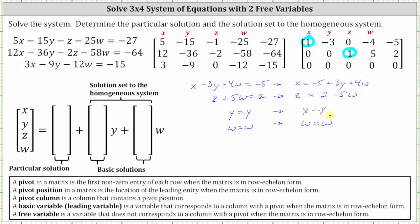Now we use these four equations to write the solution in vector form. Because x equals negative 5 plus 3y plus 4w, the constant term is negative 5, the coefficient of y is 3, and the coefficient of w is 4. So the first entry of the constants column matrix is negative 5, the first entry of the y-coefficient column matrix is 3, and the first entry of the w-coefficient column matrix is 4. Since y equals y, the constant term is 0, coefficient of y is 1, and coefficient of w is 0. Since z equals 2 minus 5w, the constant is 2, coefficient of y is 0, and coefficient of w is negative 5. Finally, since w equals w, the constant is 0, coefficient of y is 0, and coefficient of w is 1.